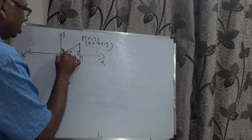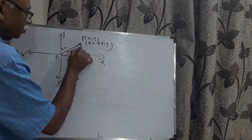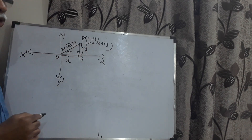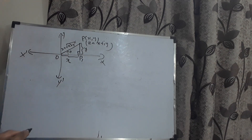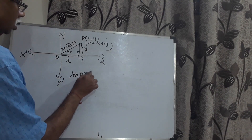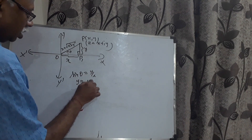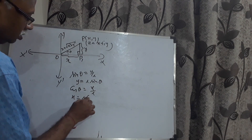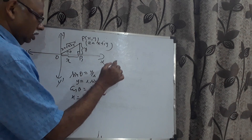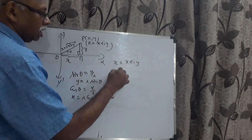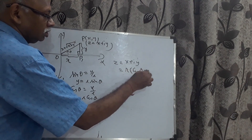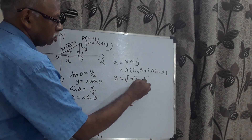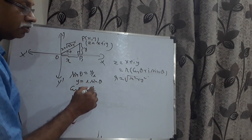Let OP make an angle theta with the positive direction of the x-axis. Then sin theta equals y over r, so y equals r·sin theta. Cos theta equals x over r, so x equals r·cos theta. Therefore, z equals x plus iy can be written as r times (cos theta plus i·sin theta), where r equals the square root of x squared plus y squared, known as the modulus of the complex number.